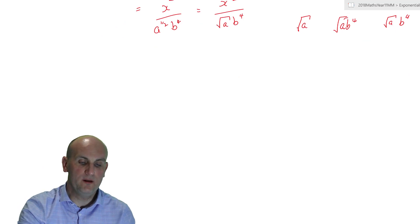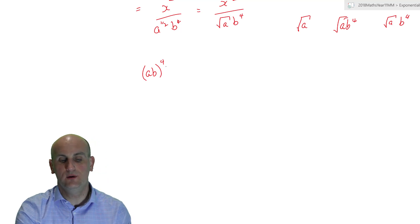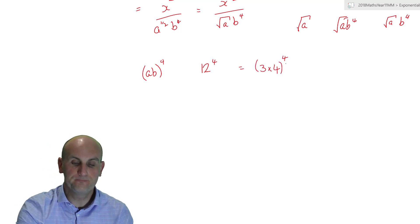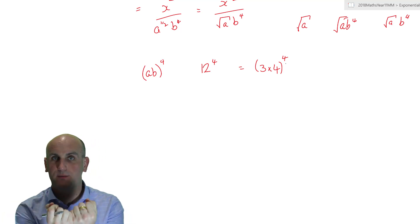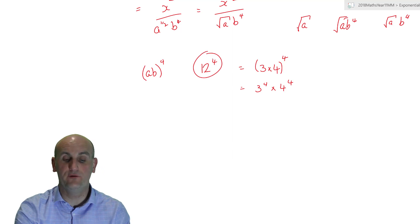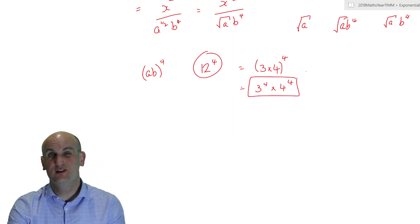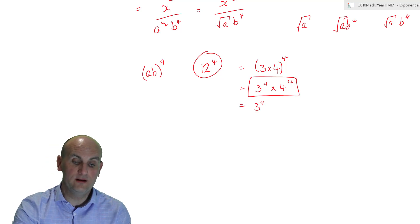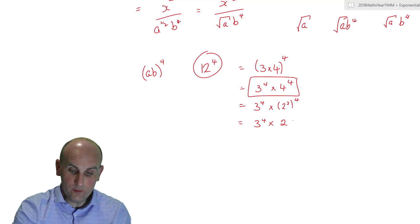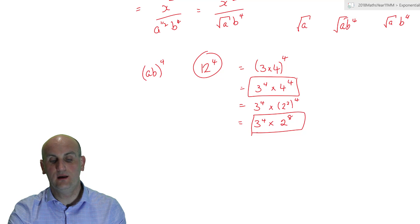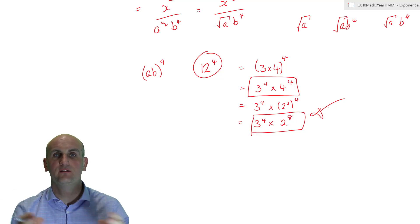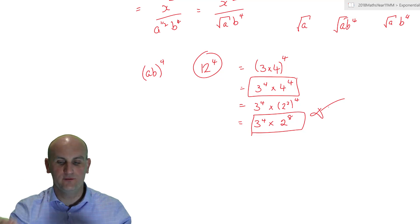Last thing: this product rule works with numbers too. Imagine 12 to the power of four. Since 12 equals three times four, that can be written as three to the power of four times four to the power of four. You can go further: four can be written as two squared, so it becomes three to the power of four times two to the power of eight. They all give the same answer on a calculator. This technique helps when exam questions give different numerical bases and ask you to simplify by finding common factors.